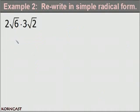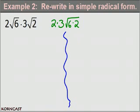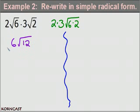In example two, we're going to rewrite this expression in simple radical form using the product property. We multiply the terms outside the radicals together — 2 times 3 — and multiply the terms inside the radicals — 6 times 2. So 2×3=6 on the outside, and 6×2=12 on the inside, giving us 6√12.